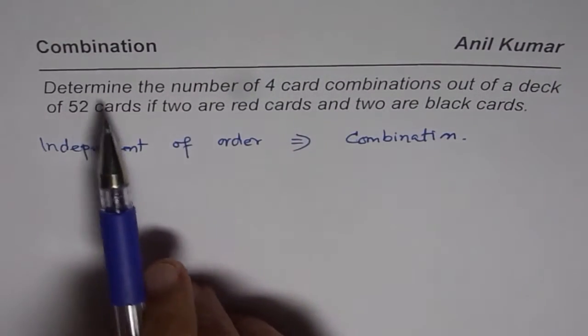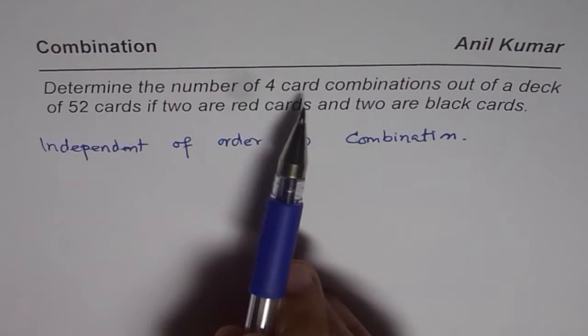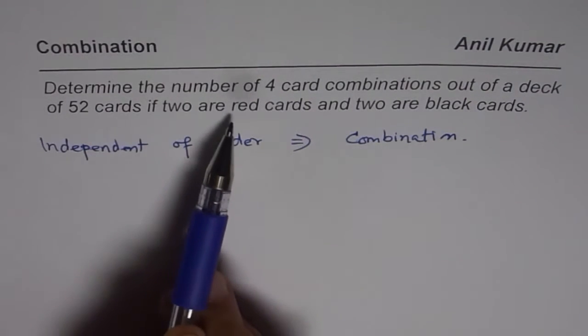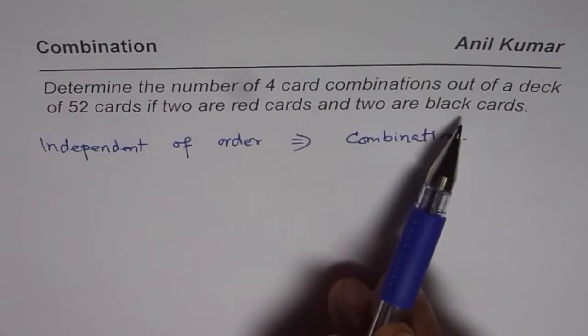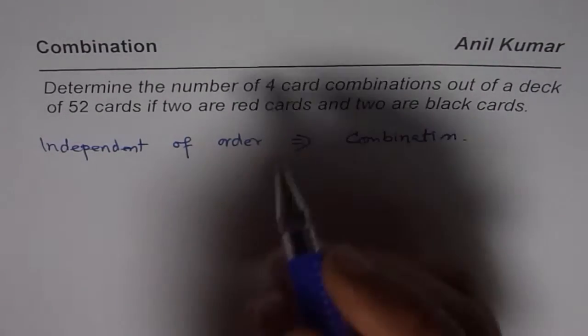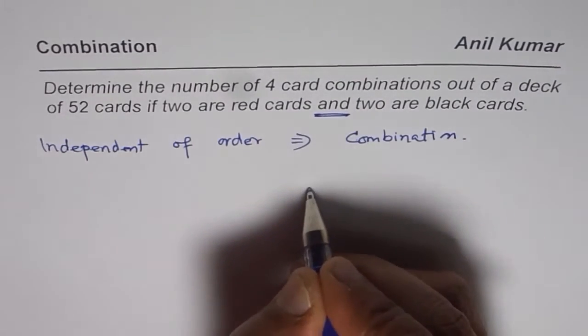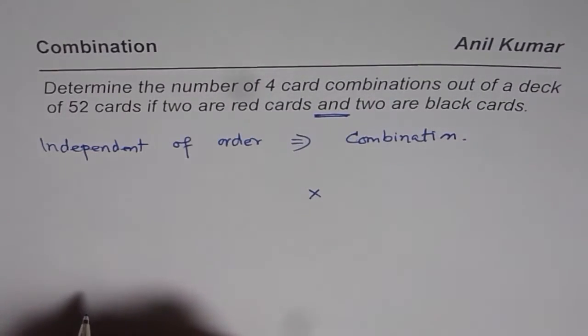Determine the number of 4 card combinations out of a deck of 52 cards if 2 are red and 2 are black. We have a condition here and that means we need to multiply, correct?